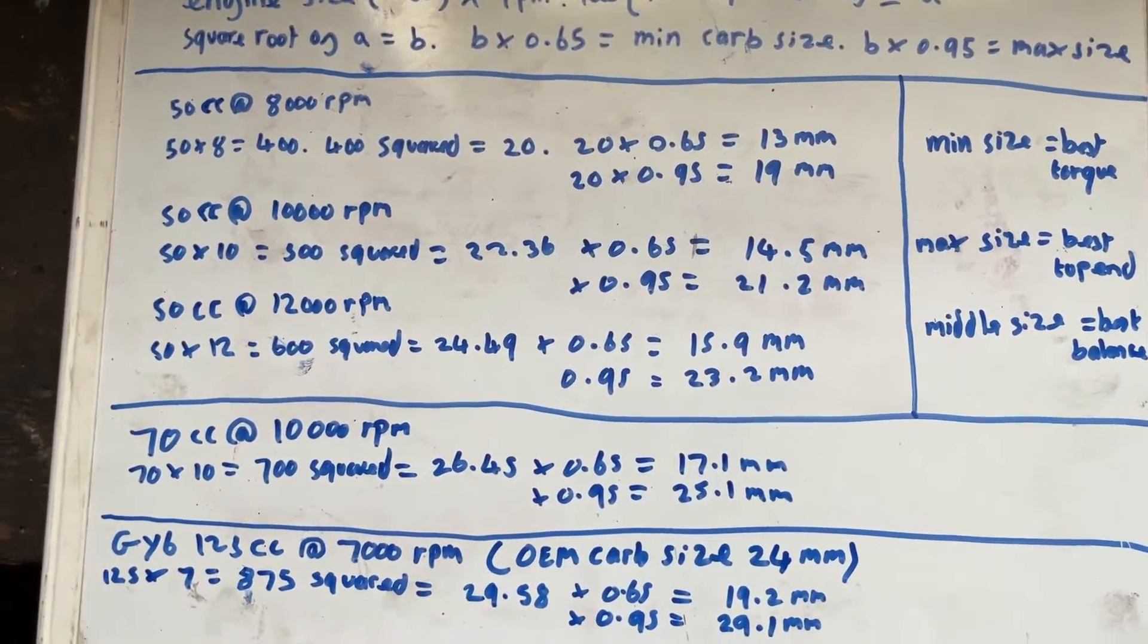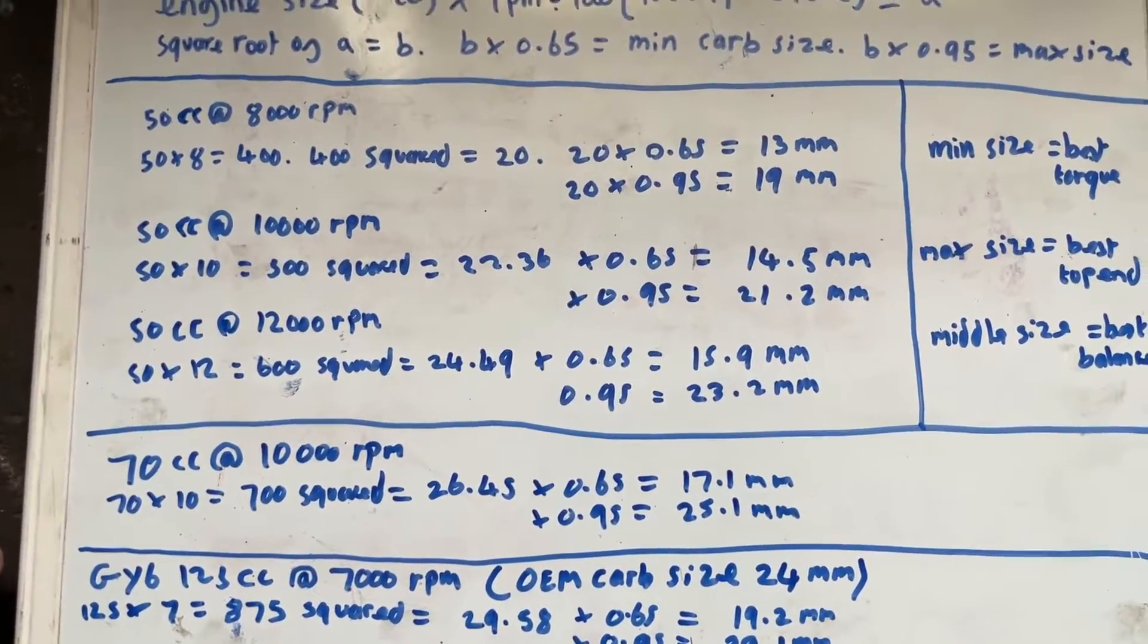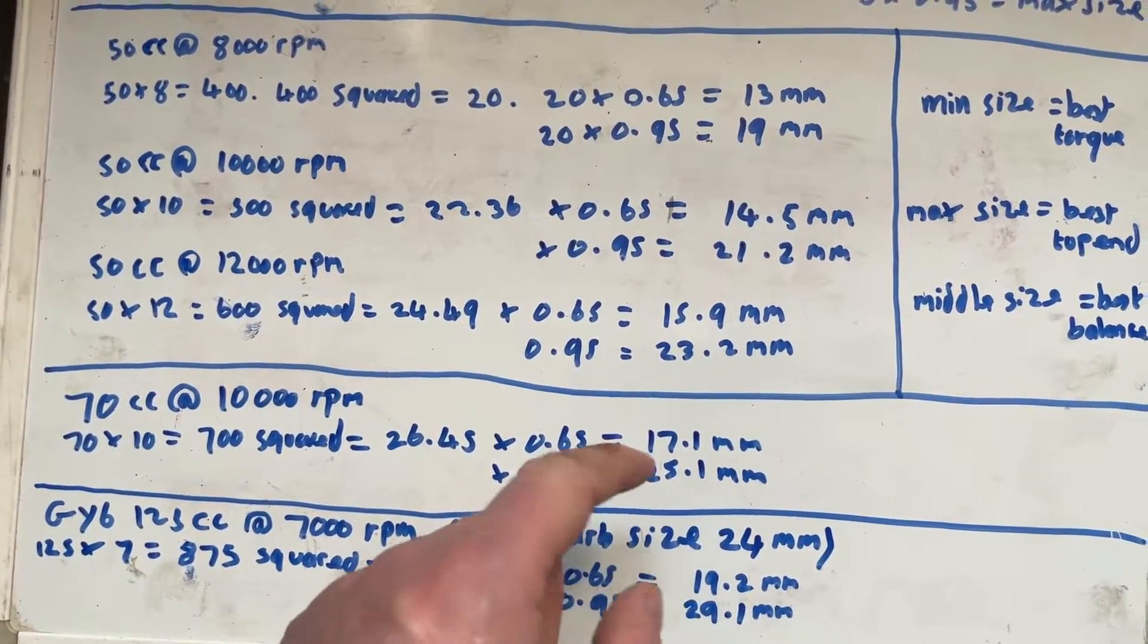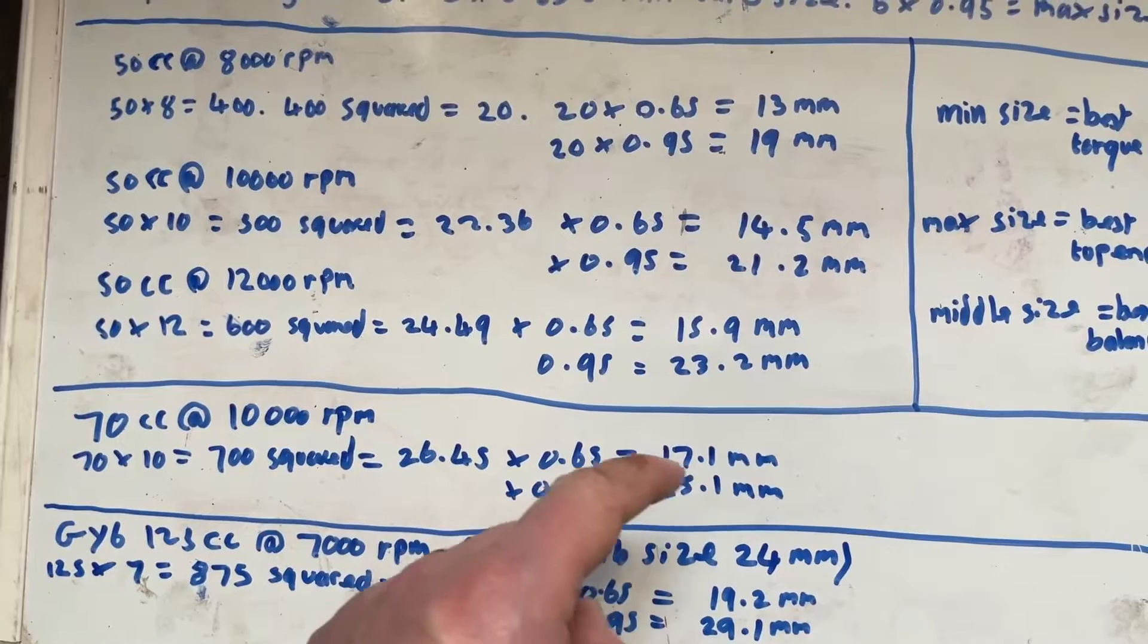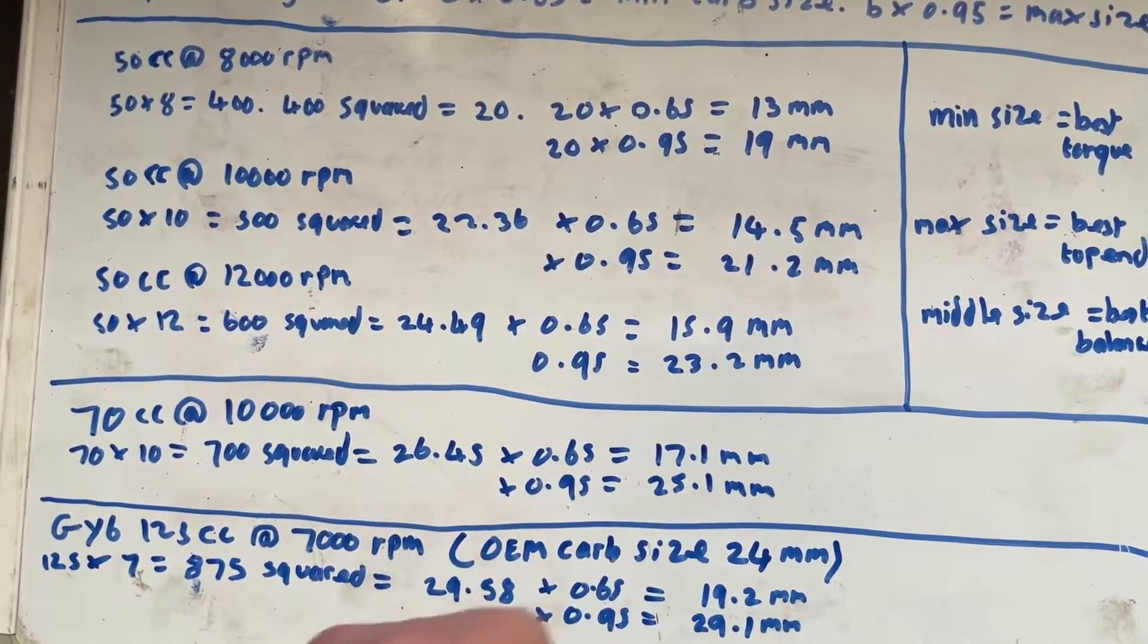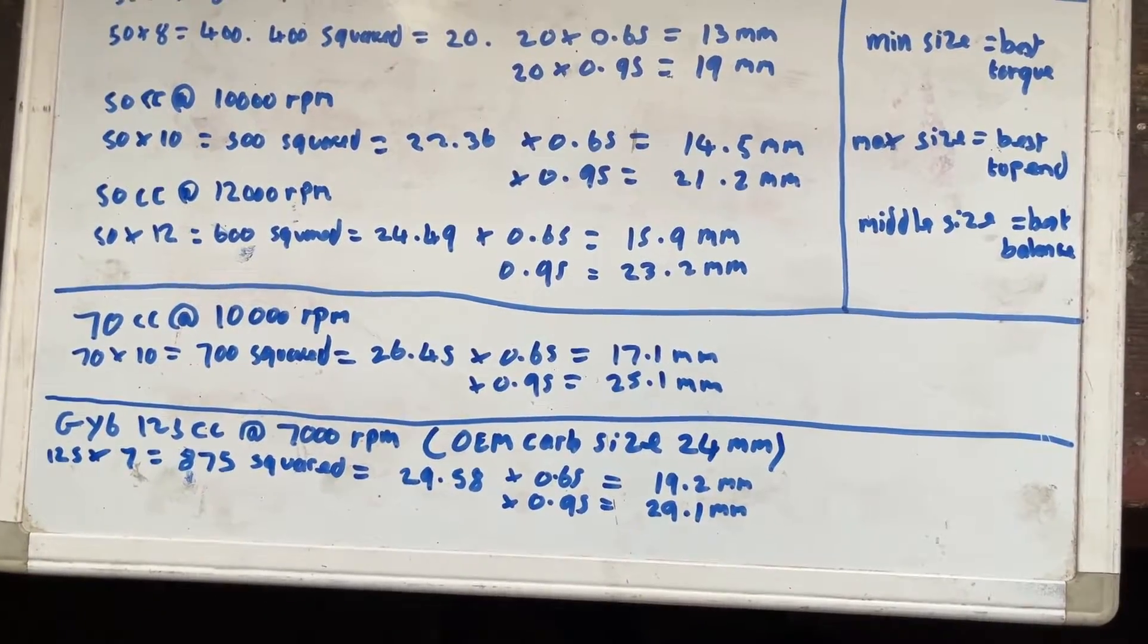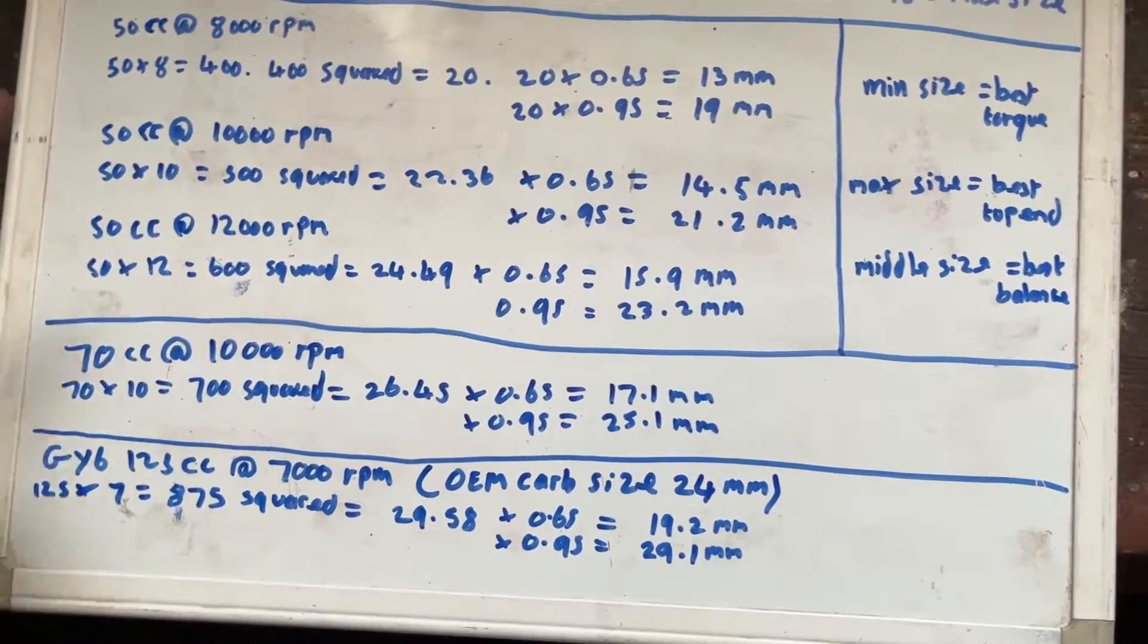So with 70 kits, people going for around about 21 millimeters, they're actually somewhere in the middle, the 19, 21 millimeter carburetors are in the middle, which is giving them a fairly good balance performance, basically.